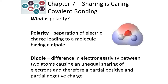The molecular shape also determines the polarity of a molecule. Polarity is a separation in charge that leads to a molecule having an uneven distribution of electrons, or a dipole. Dipoles happen because there's a difference in electronegativity between the two atoms, resulting in an unequal sharing of electrons and a partial positive and partial negative charge.